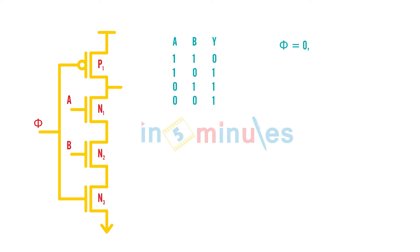Phi equal to 0. Yes, phi equal to 0: P1 on, N3 off, output charged to VDD in the pre-charge phase. Phi equal to 1: P1 off, N3 on, inputs need to be evaluated. So now we'll take all the four cases with phi equal to 1.